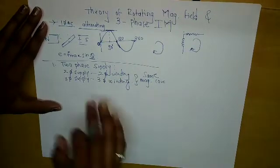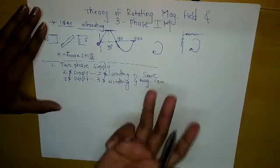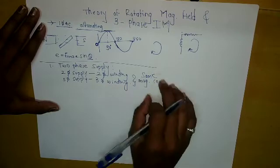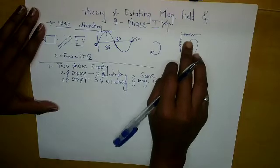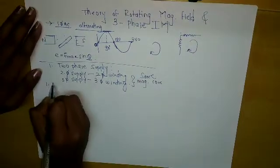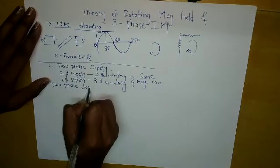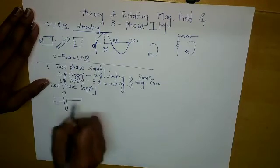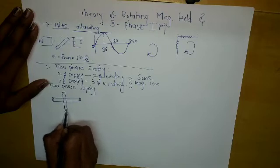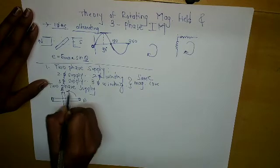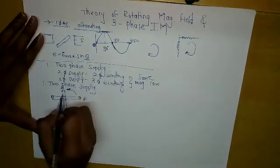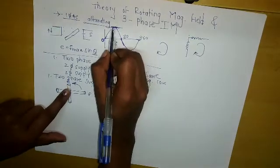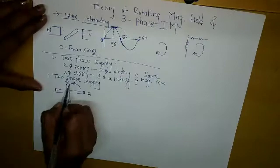We will first see for two phase supply. There will be two conductors — this is one and this is two. To get the rotating magnetic field there must be some phase difference. Here B is leading, meaning B will reach the maximum value first and then A, because it is cutting flux first.